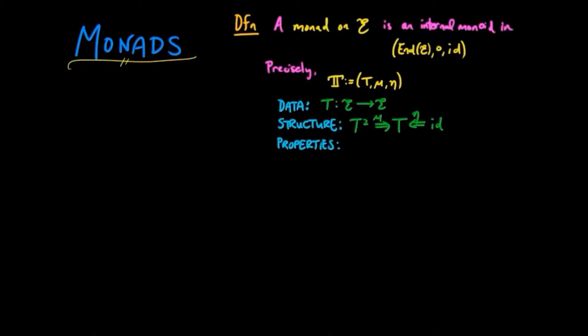where mu goes from T squared to T, and eta goes from the identity endofunctor to T. And the properties it must satisfy are the associativity law and the unit law.